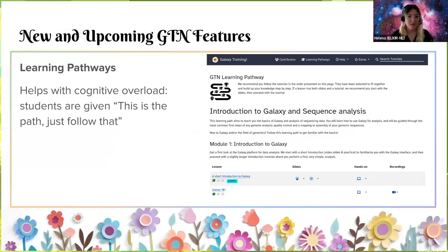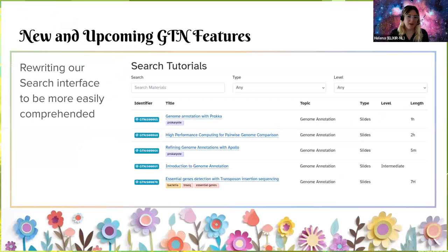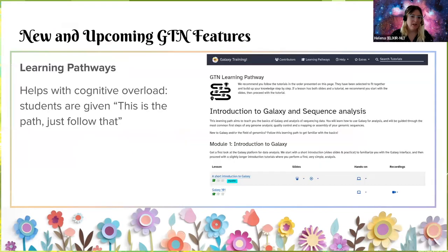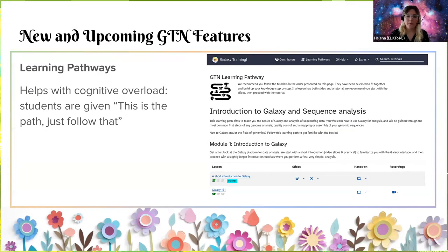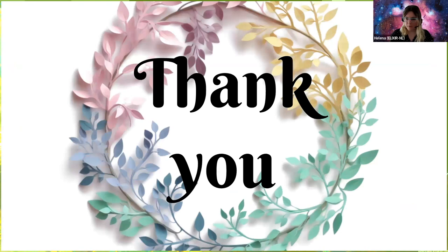There are a couple of other small GTN features — namely learning pathways and search. We're rewriting our search to be more comprehensible and easier to find content in, and we're adding learning pathways, which give you a really step-by-step guide. This goes to the cognitive overload of not being faced with 300-plus tutorials to look through. You can say, hey, this learning path sounds interesting — and it steps you through bit by bit with slides, hands-on work, or recordings if they're available. This is what we want to promote and what we think can be really useful for people. Thank you, and let me know if there are any questions.